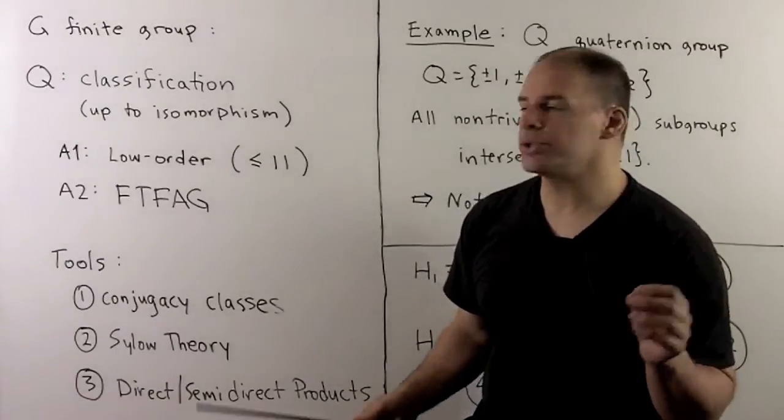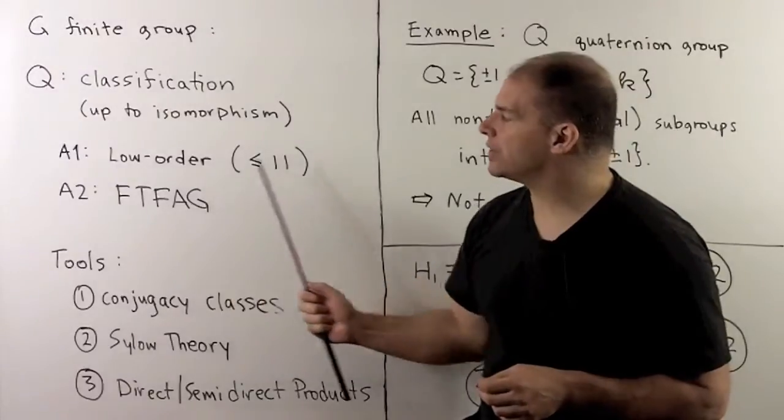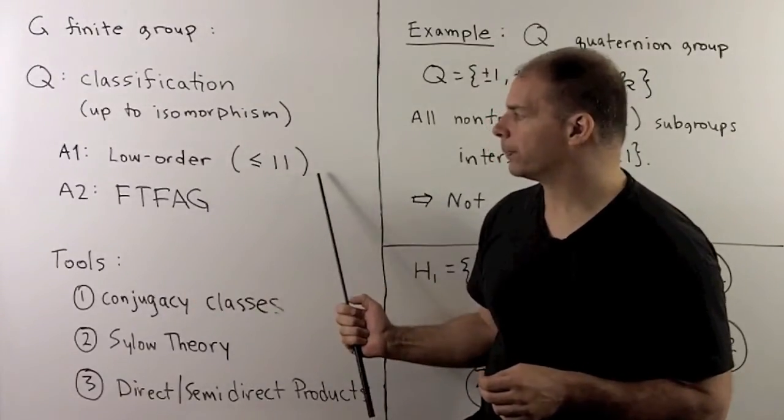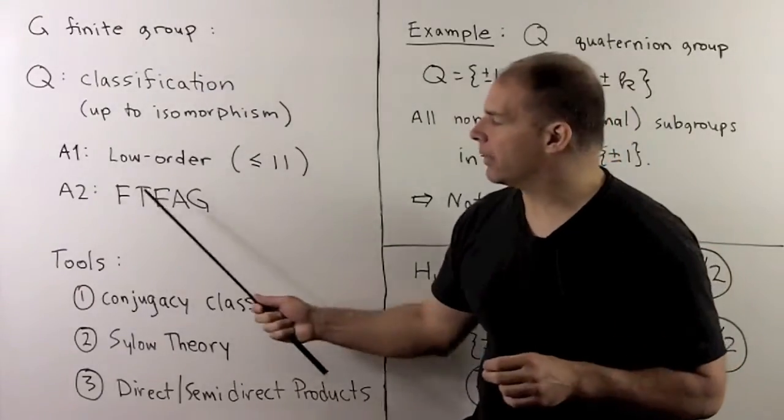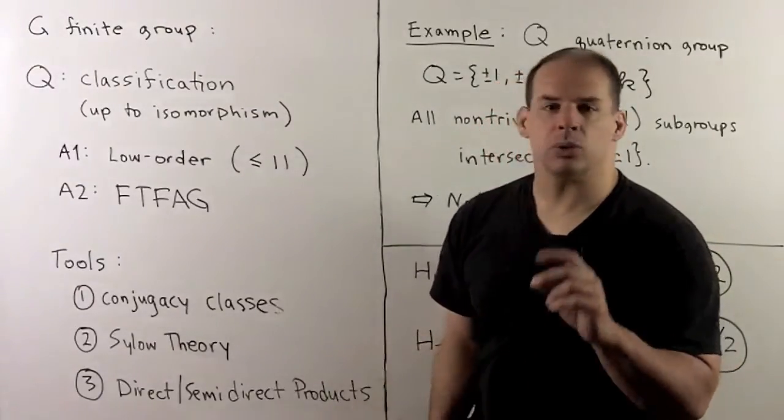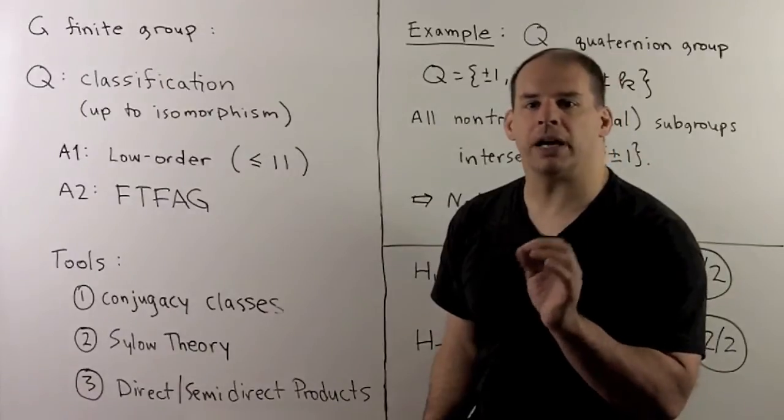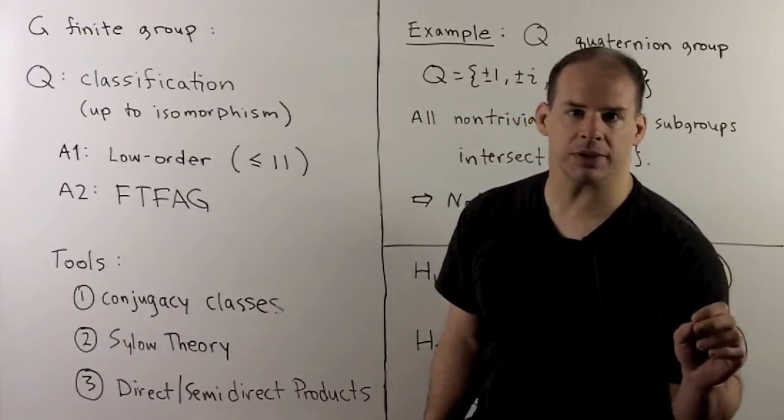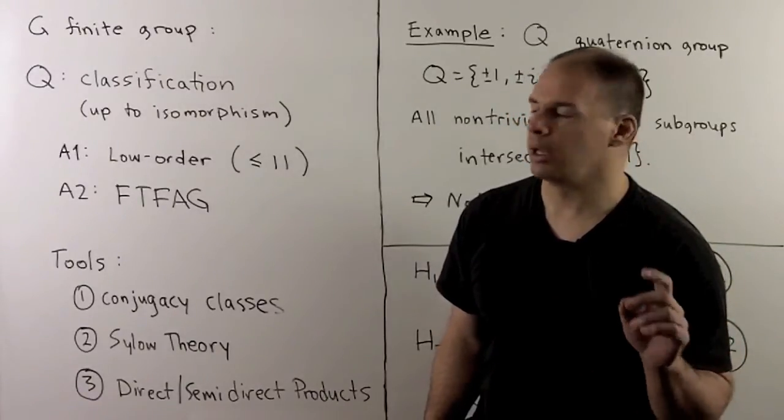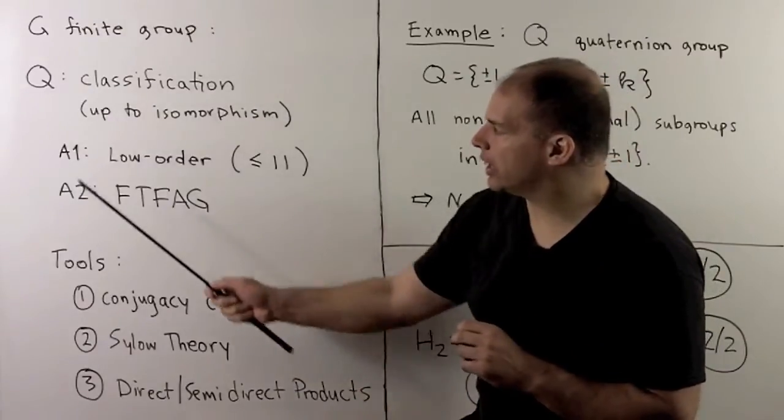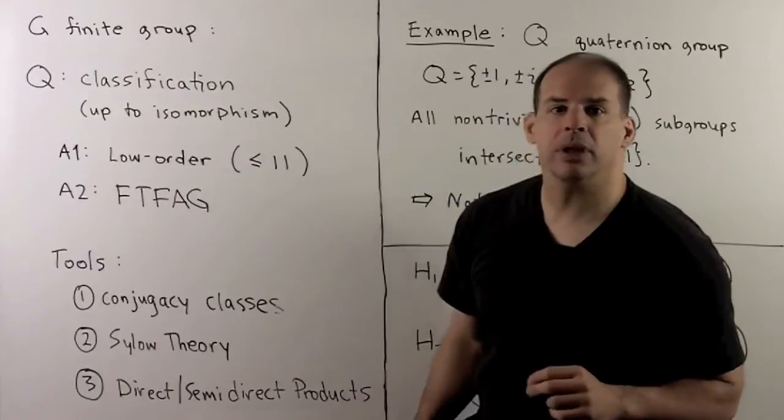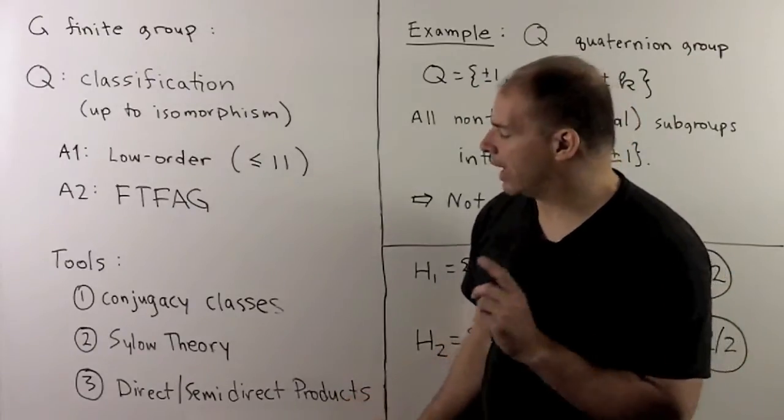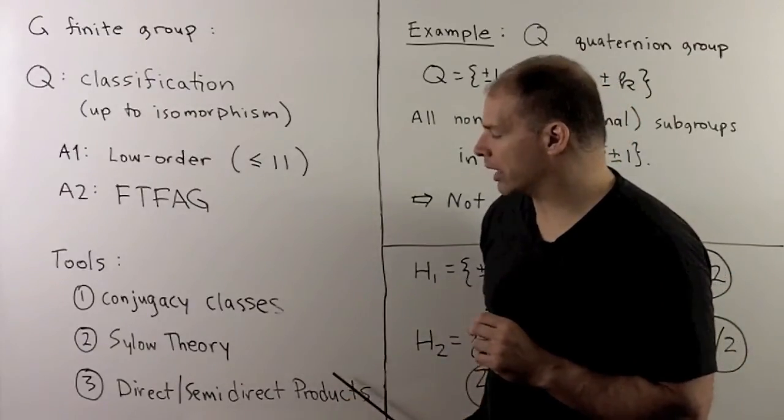Using our tools, we can do many other cases with low order. We also have fundamental theorem of finite abelian groups, which lets us classify all finite abelian groups up to isomorphism. The tools that we use here: we have conjugacy classes and the class equation, we have Sylow theory, and we have direct or semi-direct products.